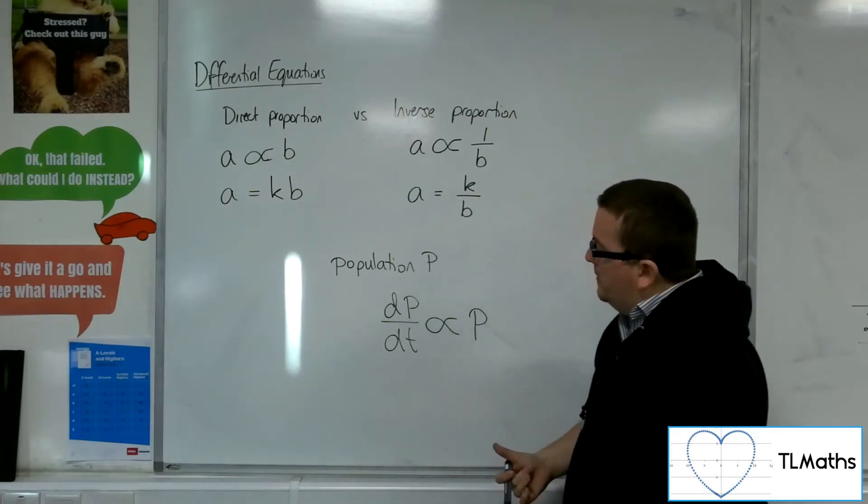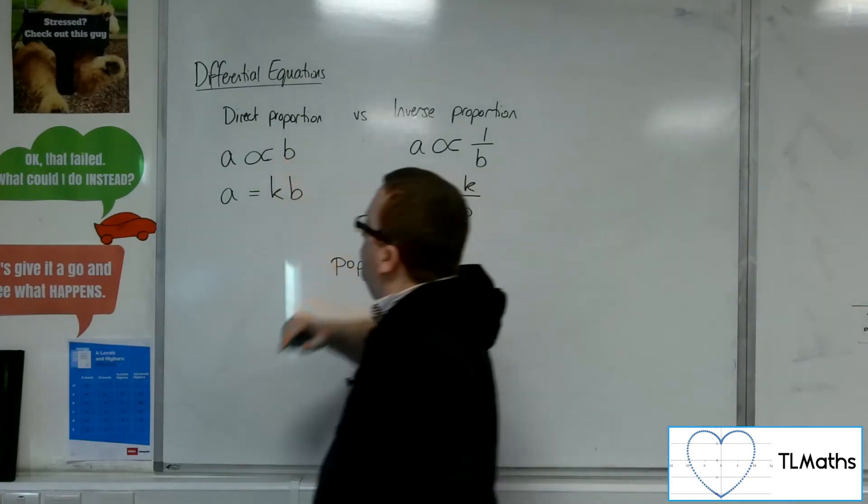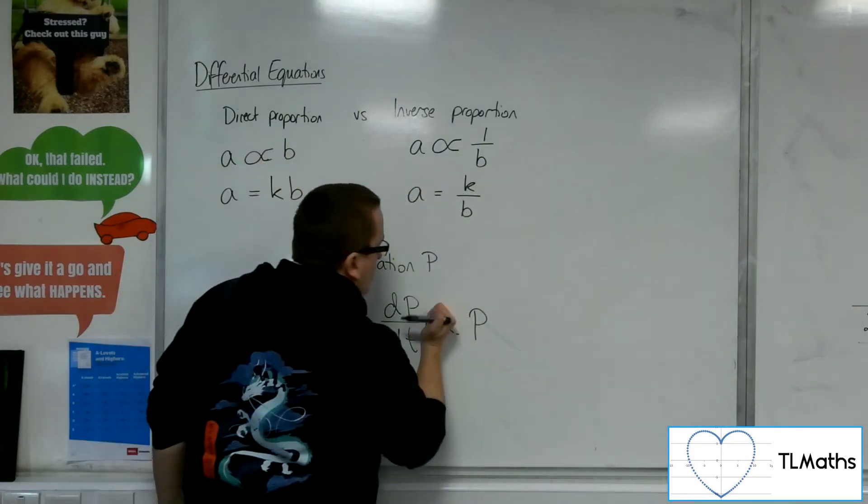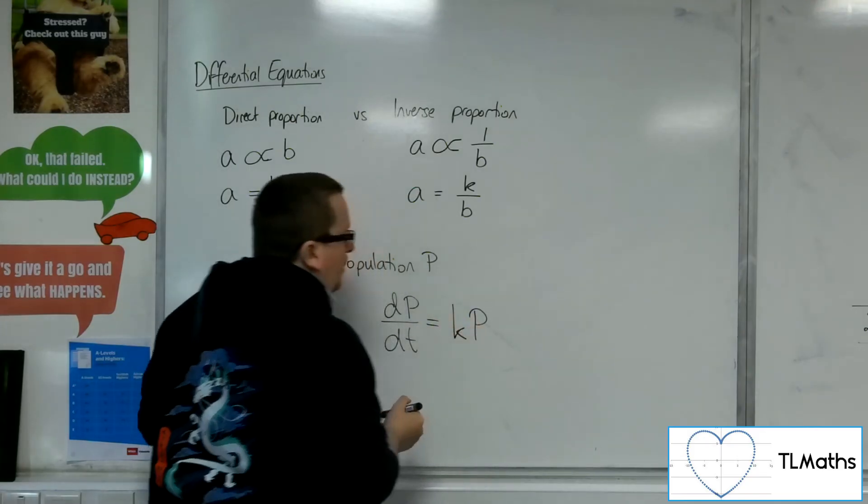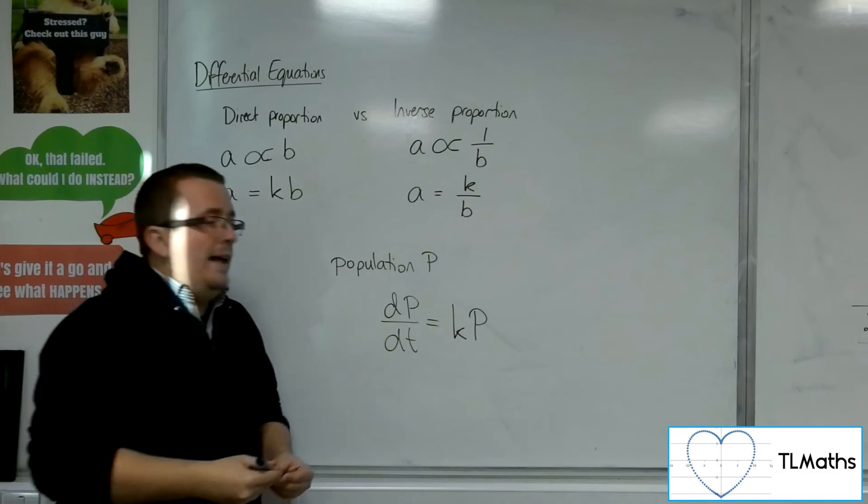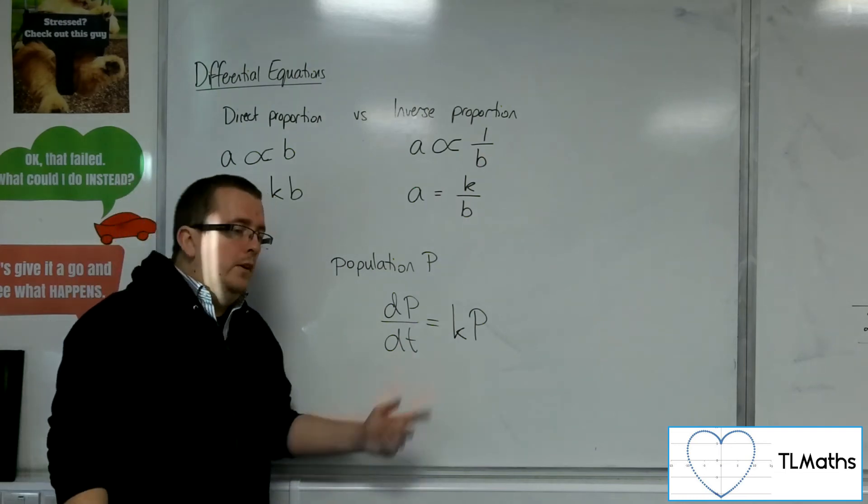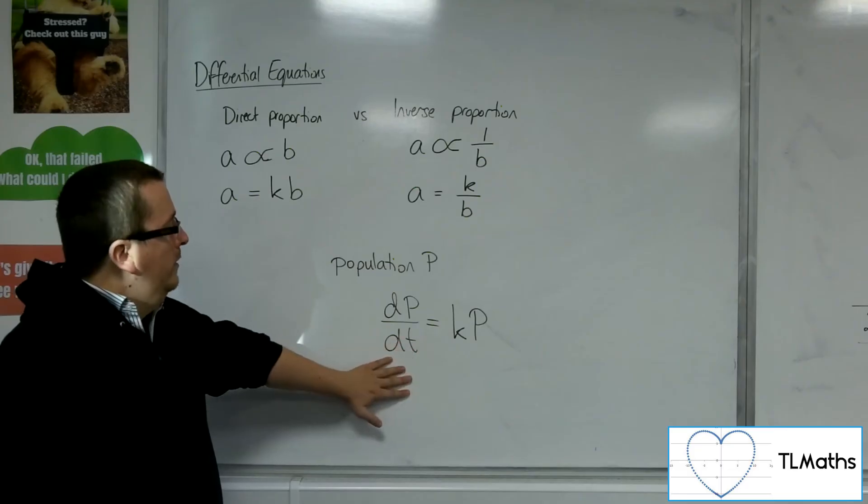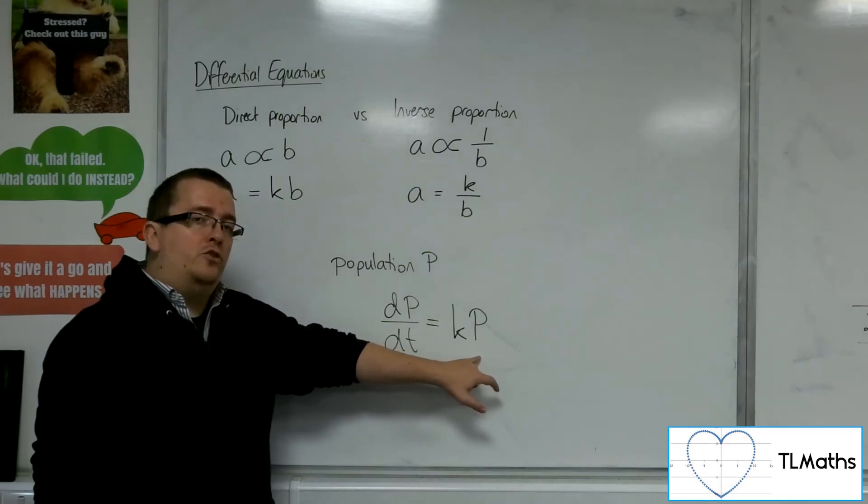This is an equal sign. So we know that if I write A is proportional to B up here, then really what I'm saying is that dP by dT is equal to some multiple of P. And this is the differential equation that is required. So the rate of growth of the population is proportional to the current size of the population.